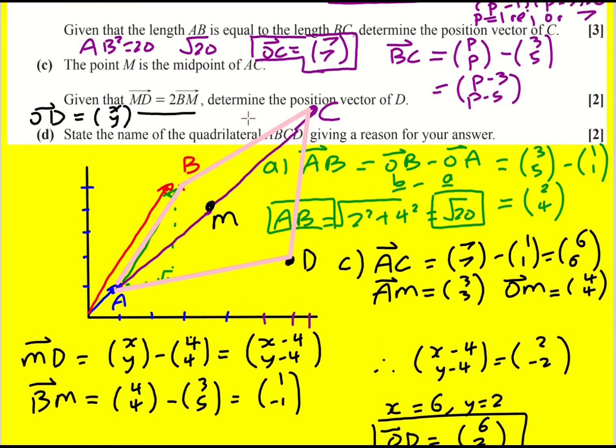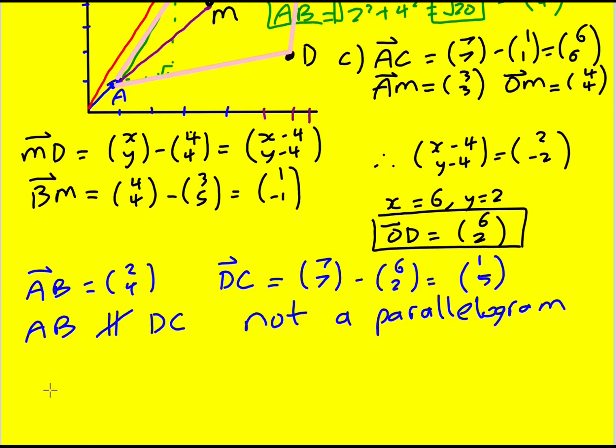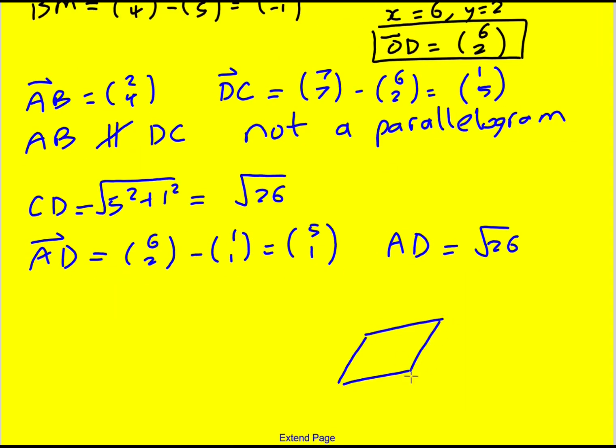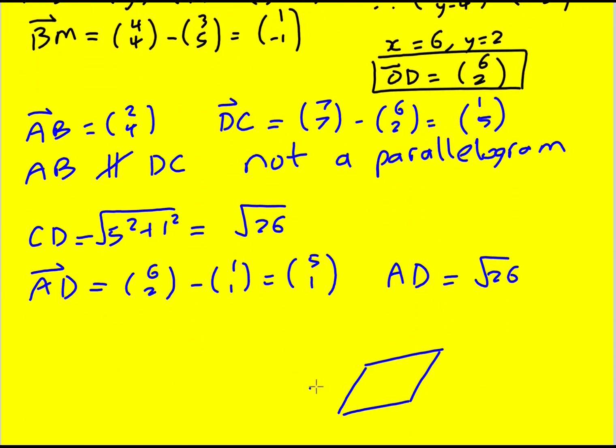Okay, then I thought, right, we've worked out the length of AB before. It was root 20. So let's work out the length of CD. That's going to be 5 squared plus 1 squared square rooted, which is root 26. Okay, let's work out the length of AD. So AD is going to be 6, 2 minus 1, 1, which gives 5, 1. And therefore AD is also going to be root 26. Now we're getting somewhere because we have this kind of shape. We've just seen that it was AB was root 20. This one's root 26 and this one is root 26. So these two are the same.